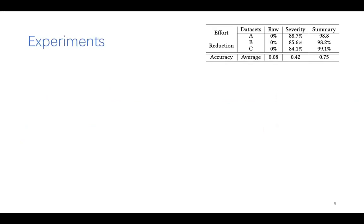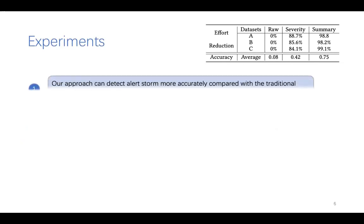To evaluate the effectiveness of our approach, we conducted an experimental study based on 166 alert storm cases from a large commercial bank and obtained these conclusions. First, our approach can detect alert storm more accurately compared with the traditional threshold-based method, achieving an F1 score larger than 0.9.